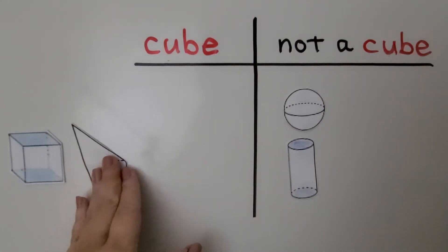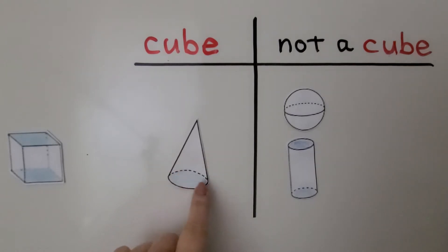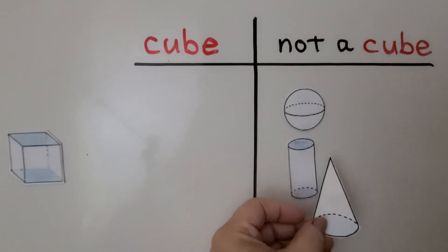Is this a cube? I see one flat side. A cube has six flat sides. This is not a cube. This is a cone. We can put it in the not a cube side.